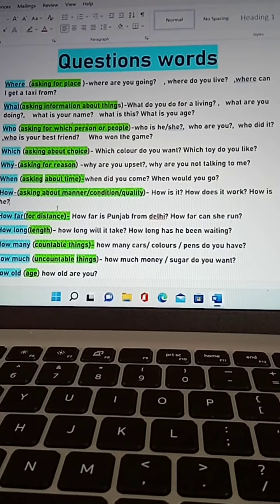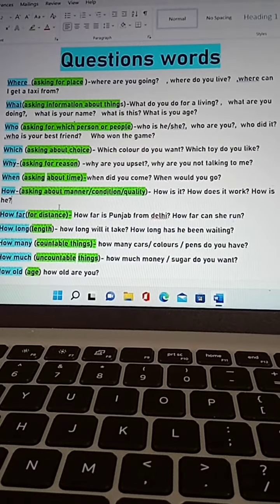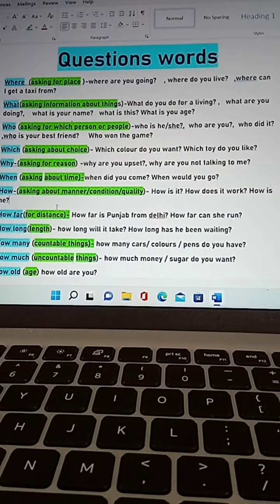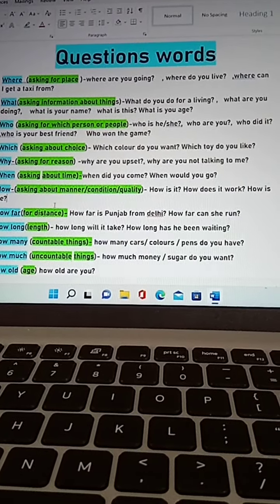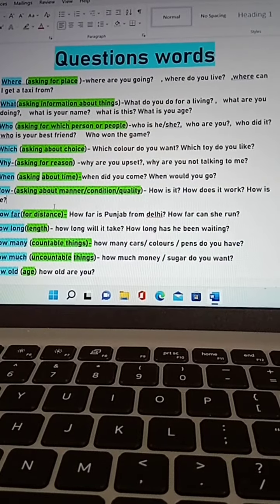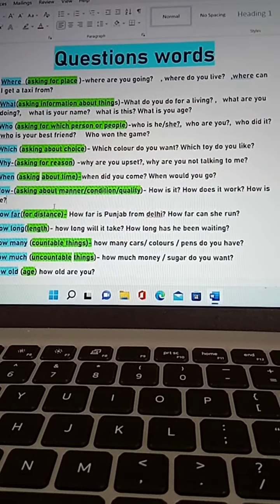Who won the game? These are examples of who. Which is used to know about choices. Which color do you want? Or which toy do you like?